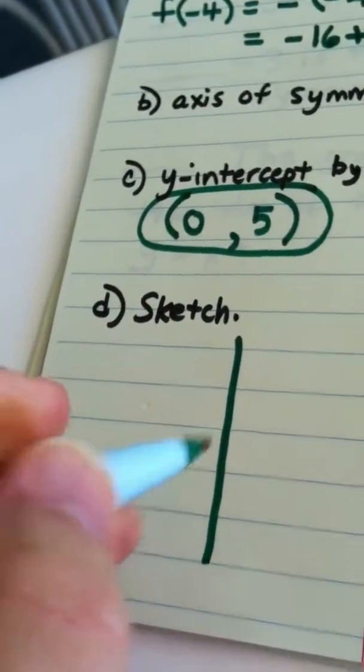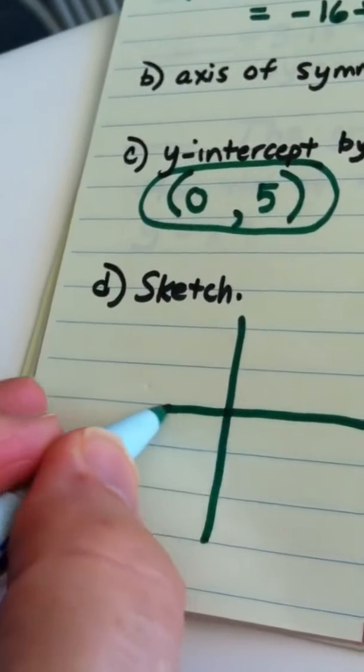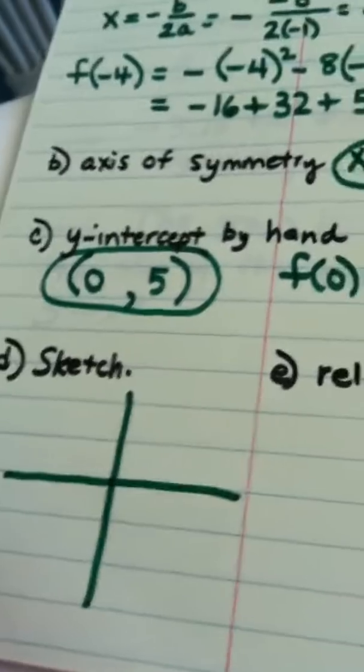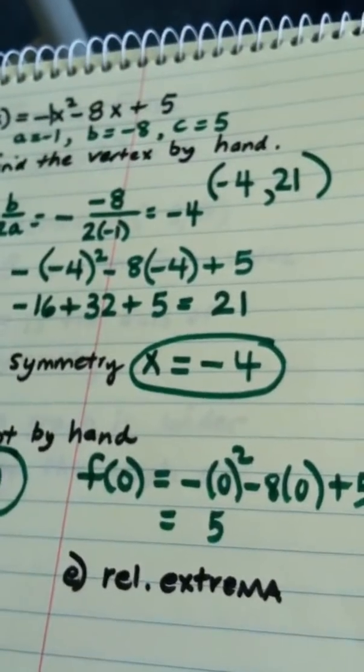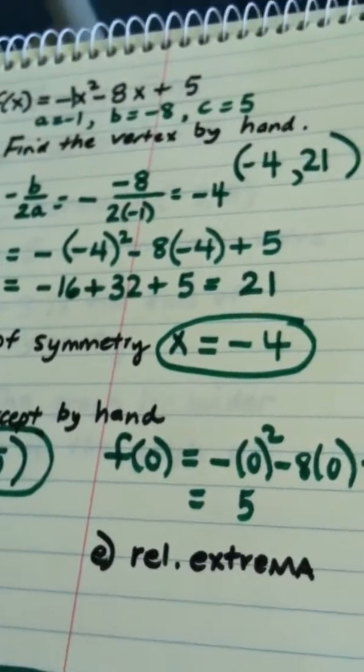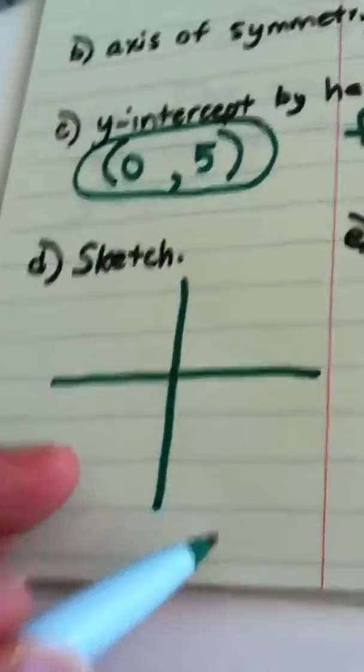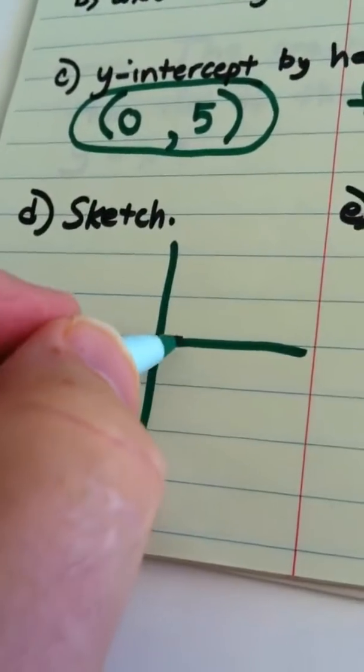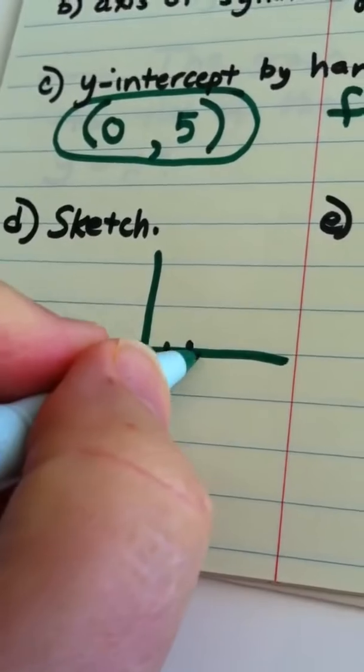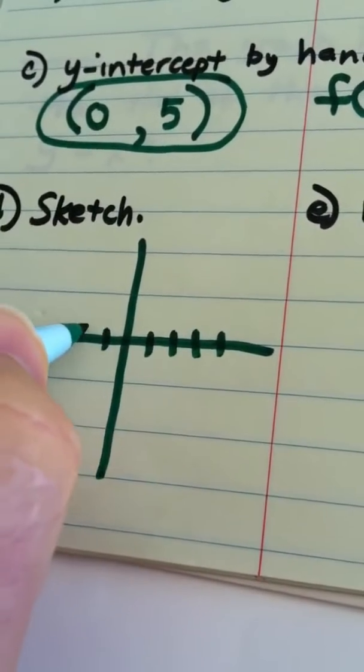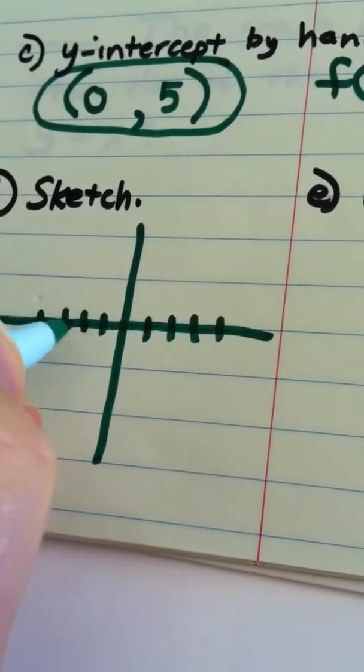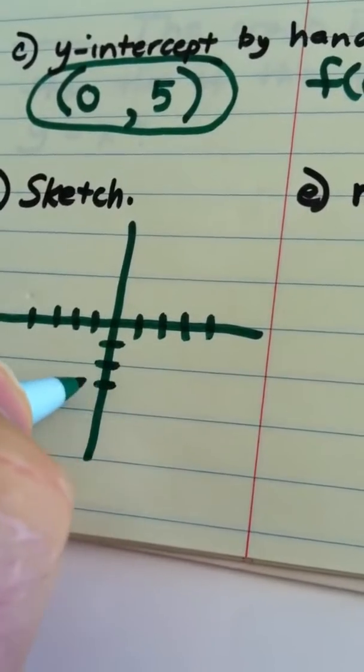Okay, we're asked to sketch the graph. Alright, the ordered pair negative 4, 21, the x-value I'm okay with. The y-value is a little bad. So you know what we're going to do? How about we do this? How about we change, we'll let the x-value, we'll let the x-scale be normal.